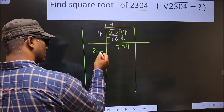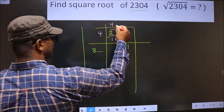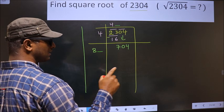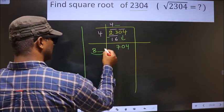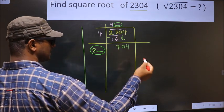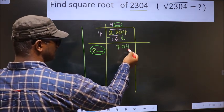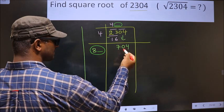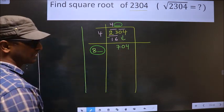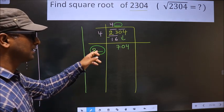Condition is whatever number you write here, here also you should write the same number. And also, when you multiply this number and this number, the resulting number should be either this or smaller than this but not beyond this. Okay, so let us find the number here.